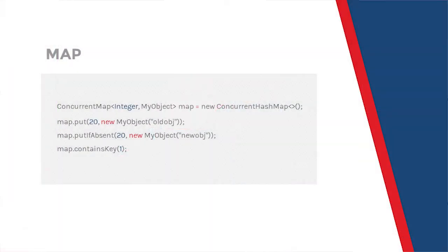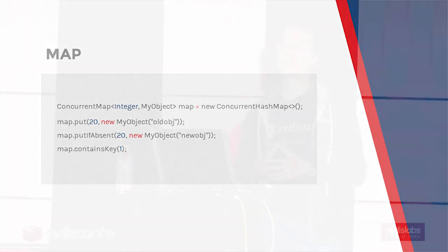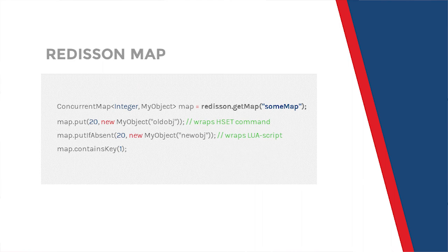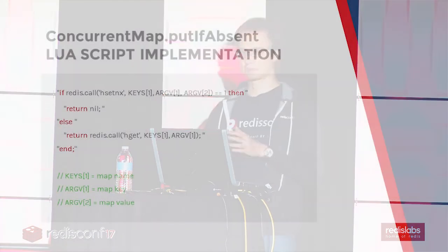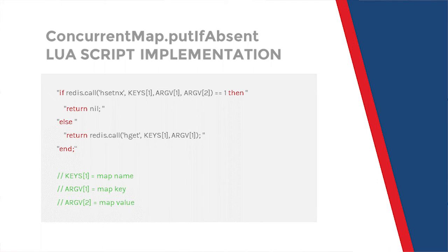Map is the most popular data structure in Java and here is a typical usage of map. If you want to change your code to achieve the same with a Redis hash, the only change you should do is to create the map using Redisson. Redisson maps object methods directly to Redis commands or Lua scripts. In this example, the put method maps directly to the hset command.